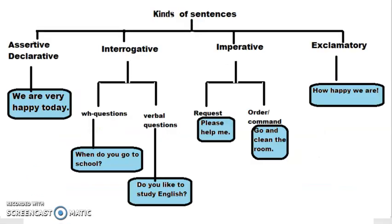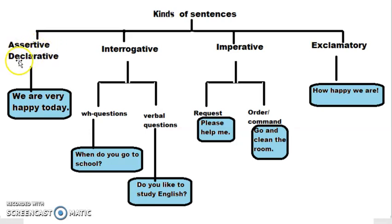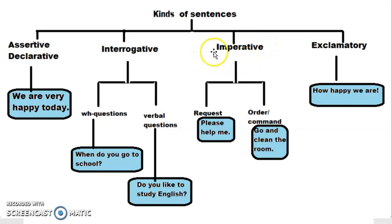Let us see this table: kinds of sentences. First type — assertive sentence, also called declarative sentence. Second — interrogative. Third — imperative. And fourth — exclamatory sentence.